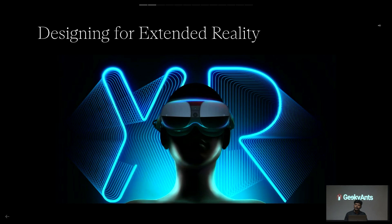Designing for extended reality is like directing a movie. There are two common criteria shared between them: visual communication and storyboarding. When you watch a movie, you are at the center and everything moves around you. In extended reality, you are directing what comes next — what scenarios and use cases happen — and you have to think about what happens when the user ends up in a wrong turn. Visual communication and storyboarding are the main principles shared with directing a movie.